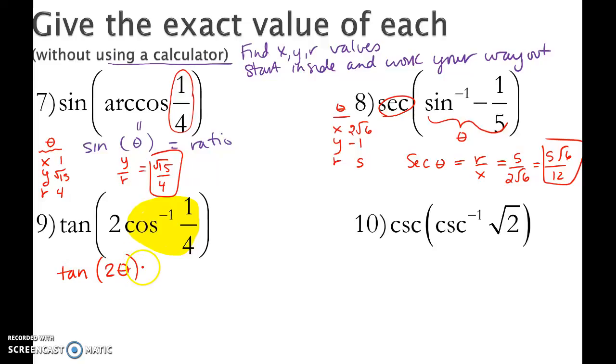So, for theta, let's get our x, y, r. I know my cosine ratio is 1 fourth, and we already found in the problem above it that y was going to be square root 15.